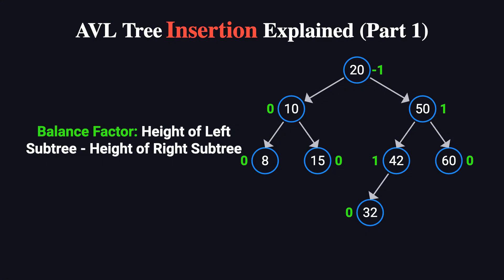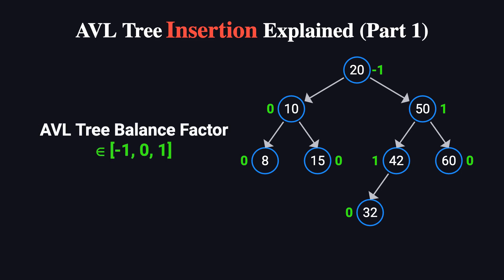The tree achieves this by maintaining something called a balance factor for each node. The balance factor is simply the difference between the heights of the left and right subtrees. To stay balanced, this value can only be -1, 0, or 1. If it ever goes beyond this range, the tree becomes unbalanced, and we fix it using rotation operations.